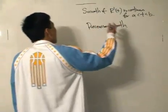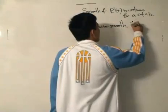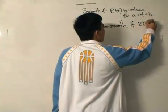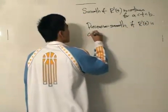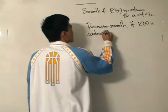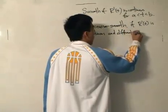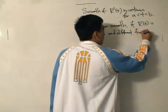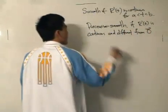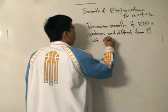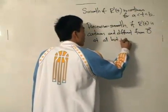And the curve is piecewise smooth if the first derivative of the position vector is continuous and different from the zero vector, at all but possibly a finite number of values of t.